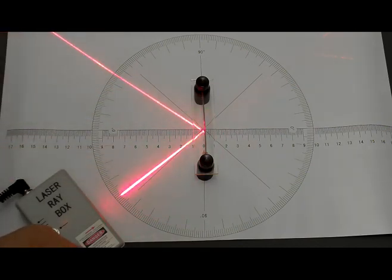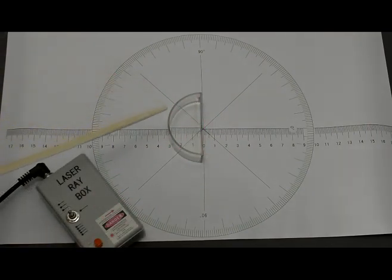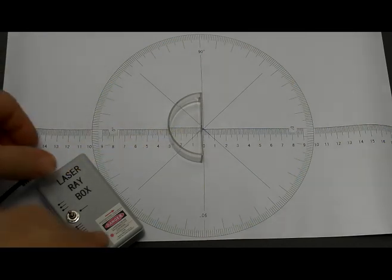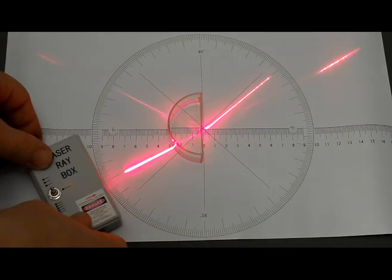The hollow semicircular cell is very useful for students investigating the critical angle of different liquids. In this case, I am using simply water, and when I shine the laser ray through, there is a slightly ghosted reflected ray, but most of it is being refracted through.